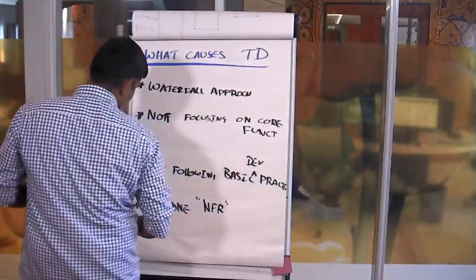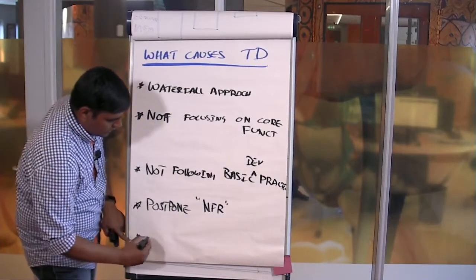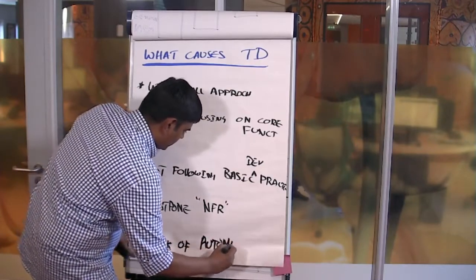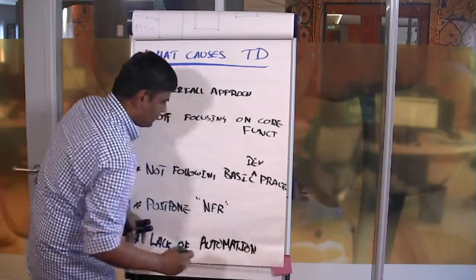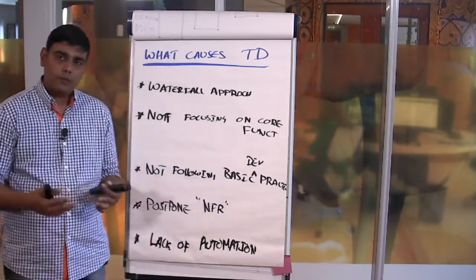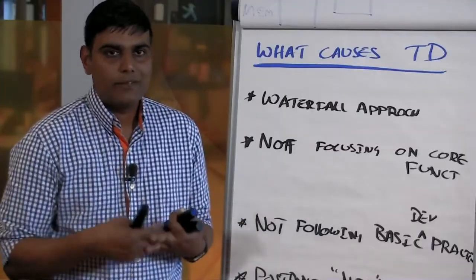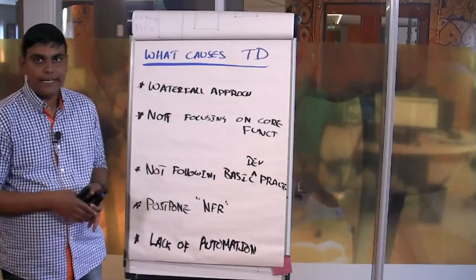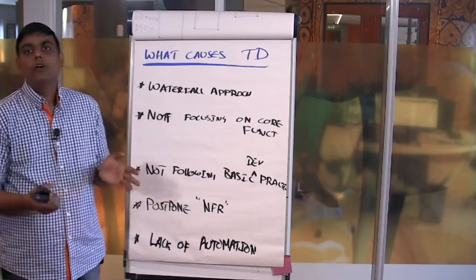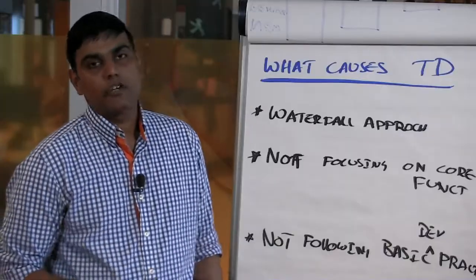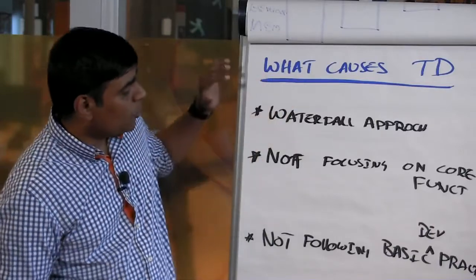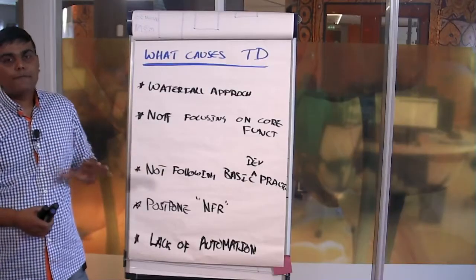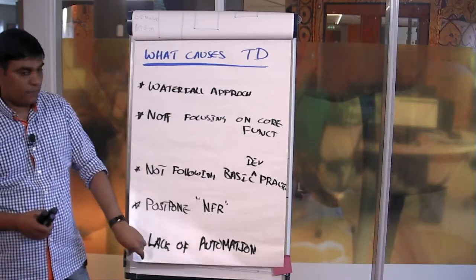The last contributing factor is lack of automation. It could be from a testing point of view — not having proper test frameworks or automation test suites — and it could also be from automating day-to-day activities like deployments, builds, and creating artifacts. This is another contributing factor that results in the accumulation of technical debt. To sum it up, in my opinion these are the five key factors which result in the accumulation of technical debt for a development team.